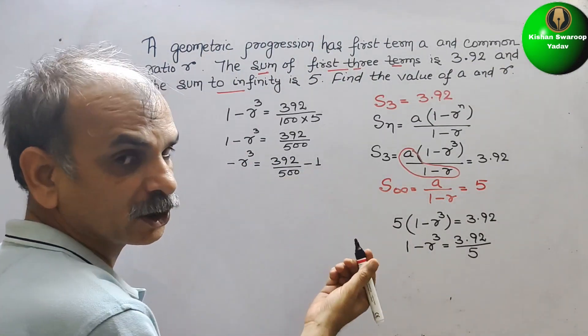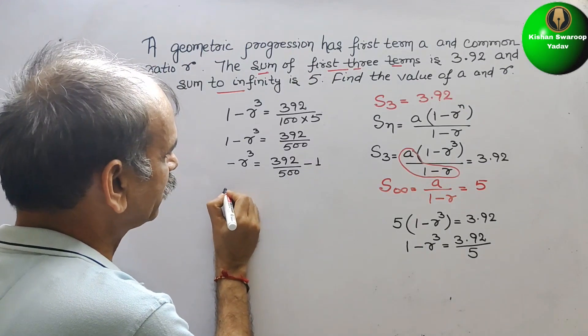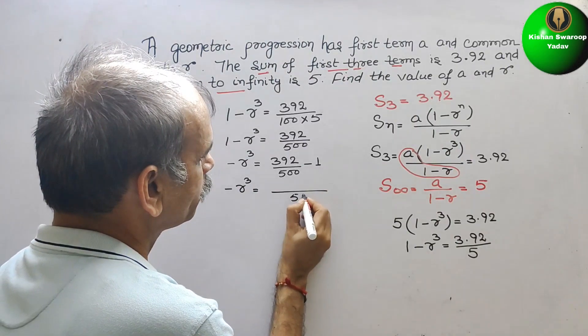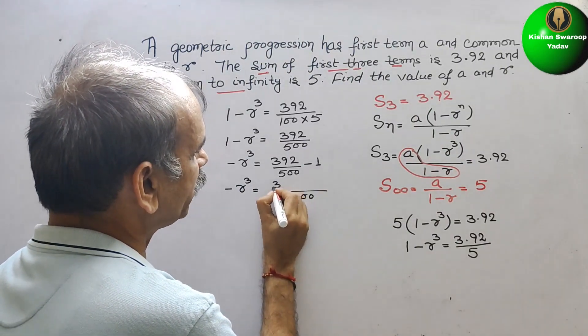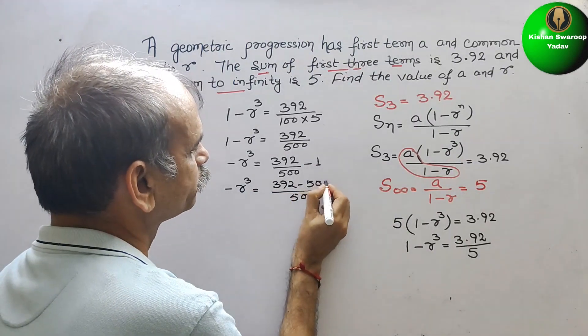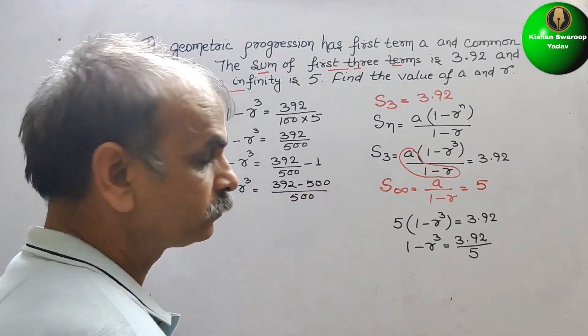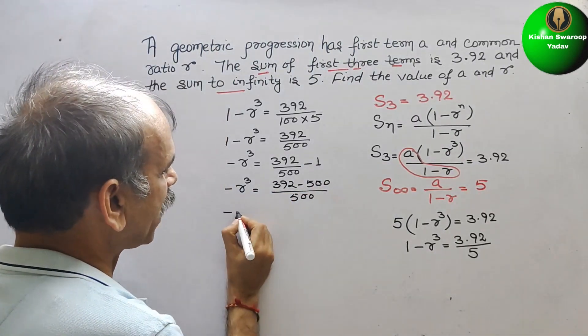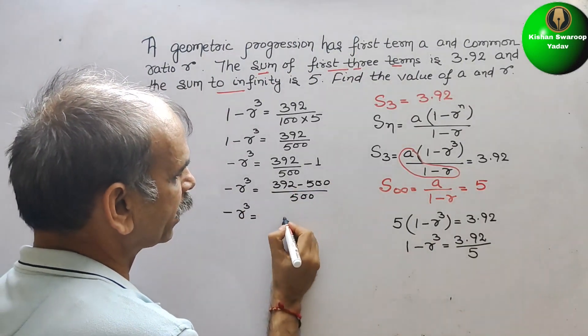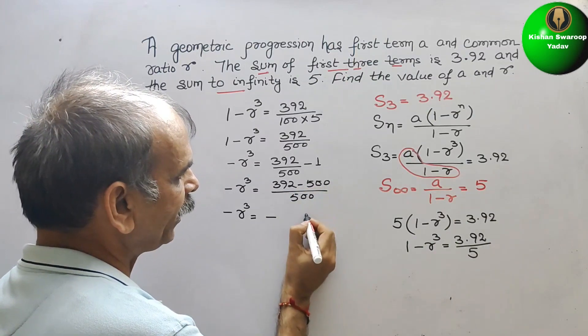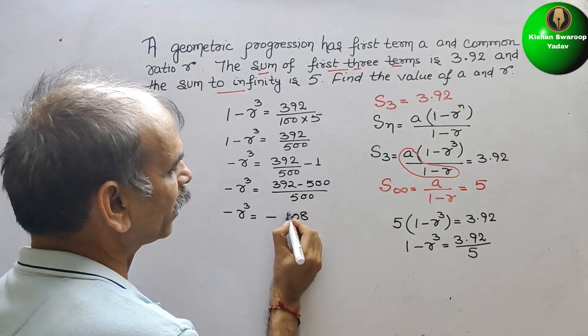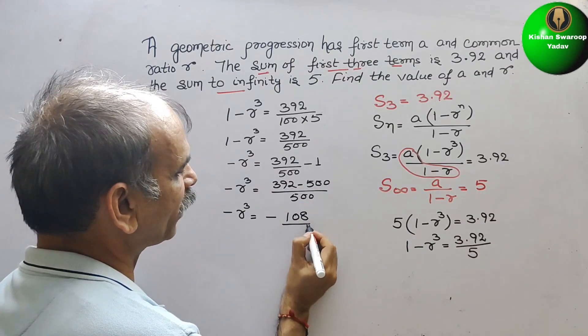Take the LCM. 1 minus R cube is equal to, the denominator is 500. Here it will be 392 minus 500. Solve this. Now minus R cube is equal to, here comes minus 496.08 by 500.